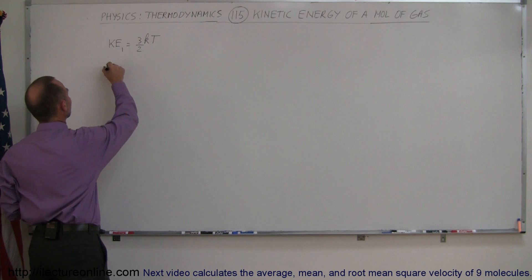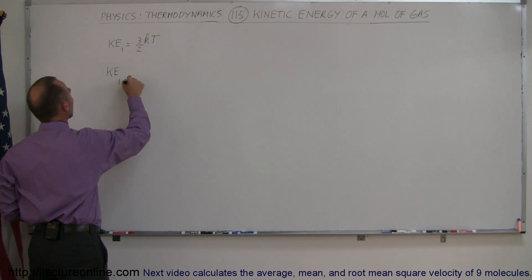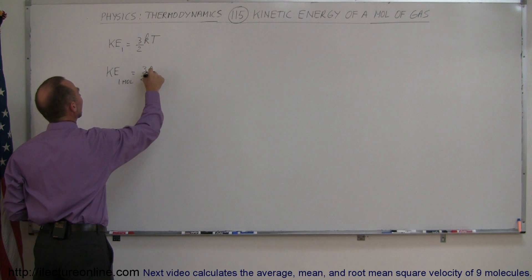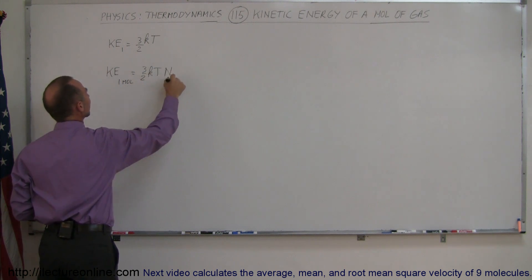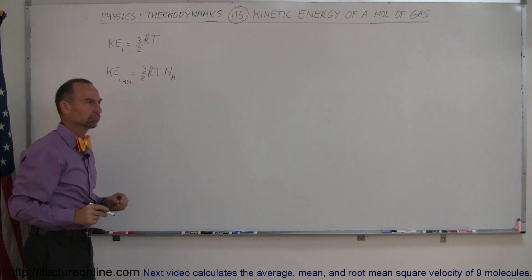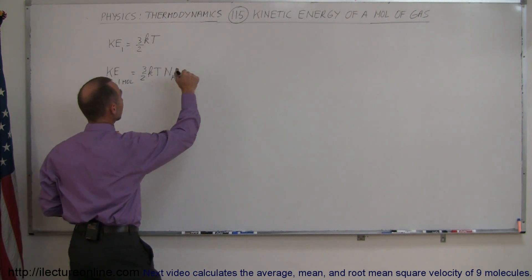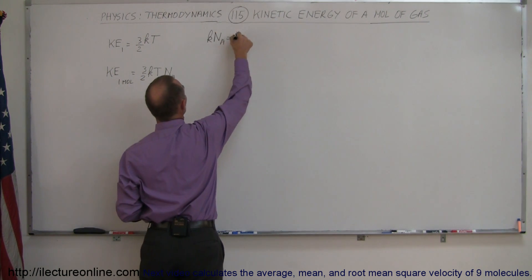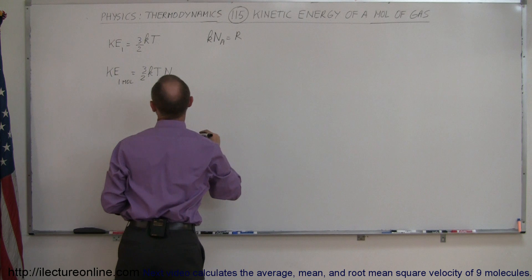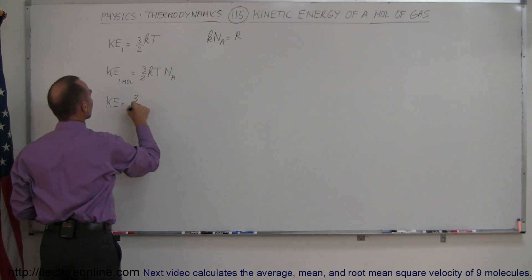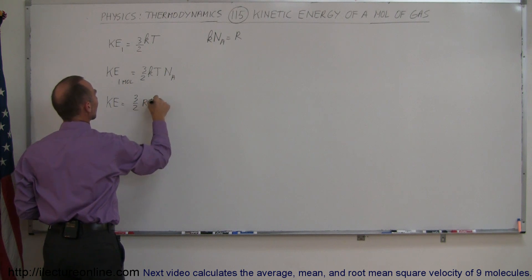You can say that the kinetic energy for one mole is equal to 3 over 2 kT times Avogadro's number. And k times Avogadro's number is equal to the gas constant R, so we can say that the kinetic energy is equal to 3 over 2 R times the temperature.